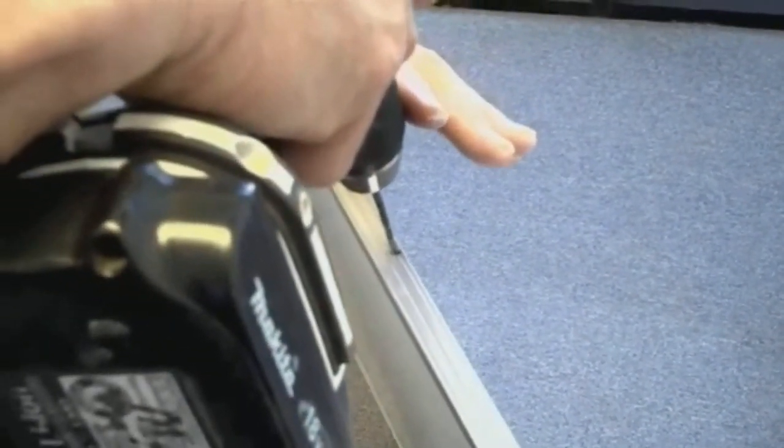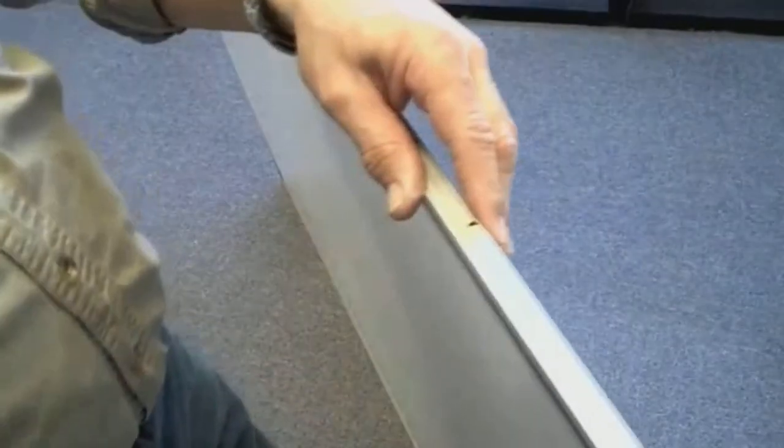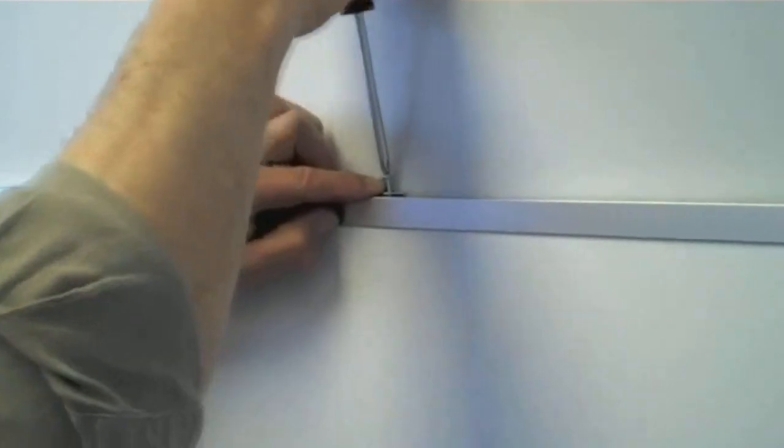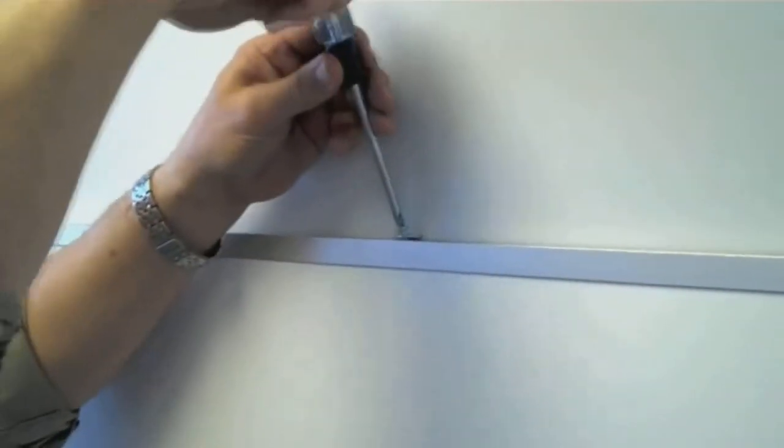Now drill holes into the top of the frame at each marked location. After replacing the board back onto the tray, attach the marker board to the wall with the screws provided.